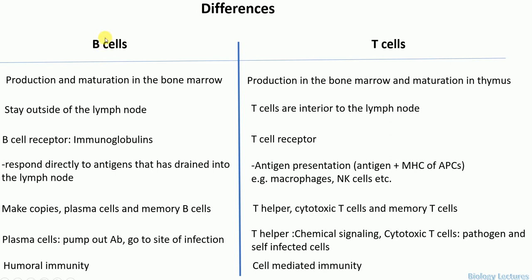To summarize: B cells are produced and matured in the bone marrow, then migrate to the lymph node where they are exterior. Their receptors are called immunoglobulins and they bind directly to antigens that have drained into the lymph node. Once selected, they undergo clonal expansion and differentiate into plasma cells and memory B cells. The plasma cells pump out antibodies that go to the site of infection and confer humoral immunity.